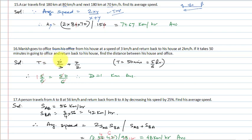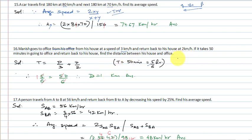Total time = time going + time returning. Going time = d/3 (speed 3 km/hr), return time = d/2 (speed 2 km/hr). Total time is 50 minutes = 5/6 hours. So 5/6 = d/3 + d/2. Taking LCM = 6, numerator gives 5d. Solving: d = 1 km. Distance from house to office is 1 km.